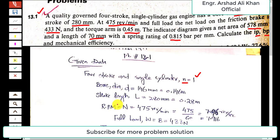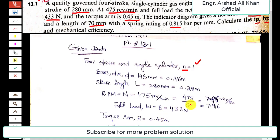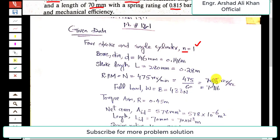The engine speed, represented by capital N, is 475 revolutions per minute, which divided by 60 gives 7.916 revolutions per second — needed later for calculating indicated power, brake power, and mechanical efficiency. The net load on the friction brake, represented by W_rb, is 433 newtons, and the torque arm, represented by capital R, is 0.45 meters.